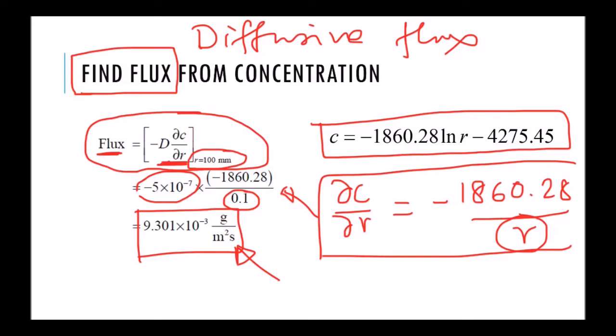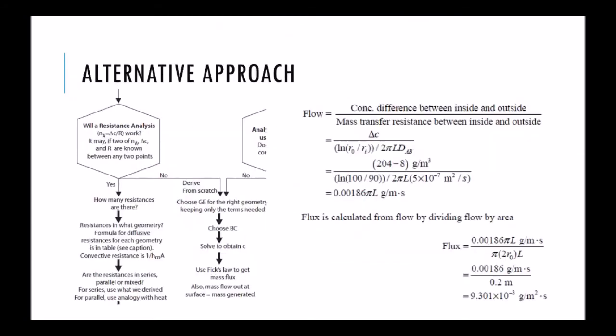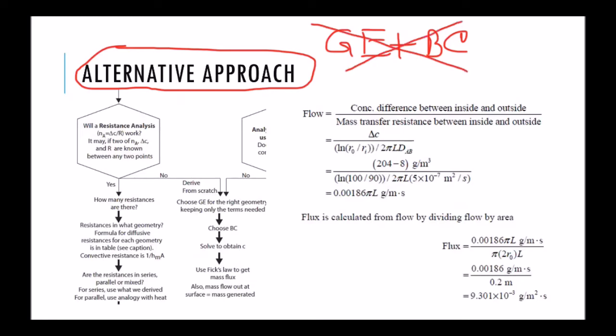Now as we had discussed before, there is another approach to solve this problem. You didn't have a choice because the problem here asked you to do this from scratch, which is GE plus BC. But if we had a choice, then maybe we didn't need to do all of that derivation. And so this is when we ask the question: will a resistance analysis work? Yes. So if resistance analysis works, then maybe it'll be easier.